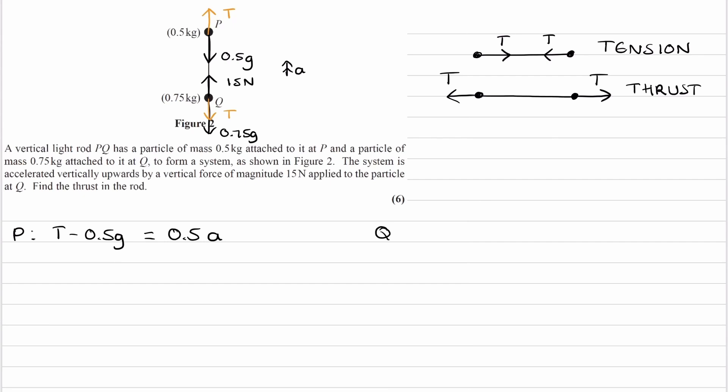Similarly for Q, which is also accelerating upwards. 50 Newtons is the upward force. The two downward forces are 0.75g and T, opposing the 50 Newton force. This overall upward force equals MA, so 0.75A. I'll call these equation 1 and equation 2. We could stop here—we don't have to form any more equations. We could just solve these two simultaneously and work out what T is.